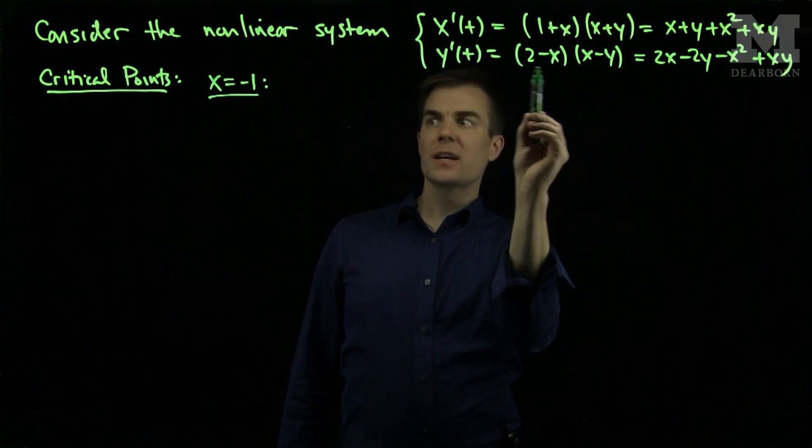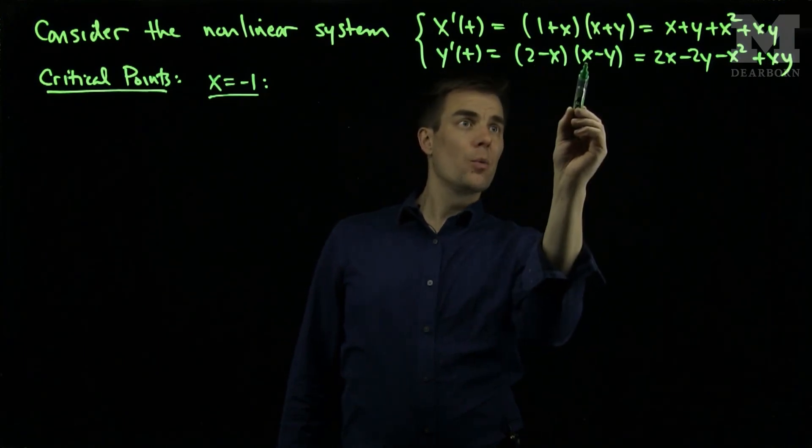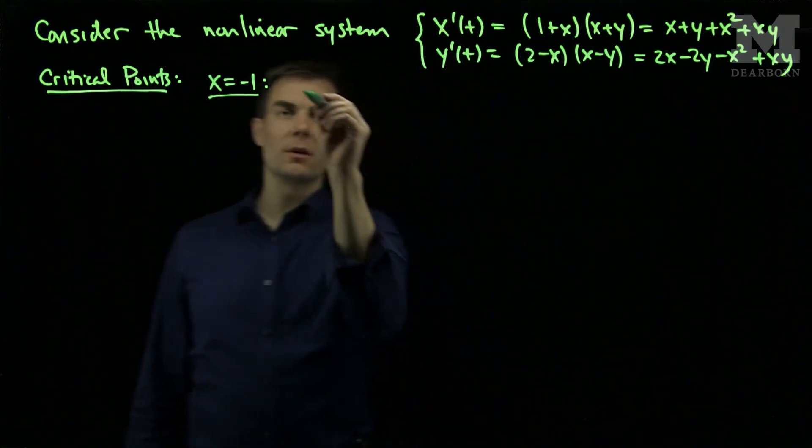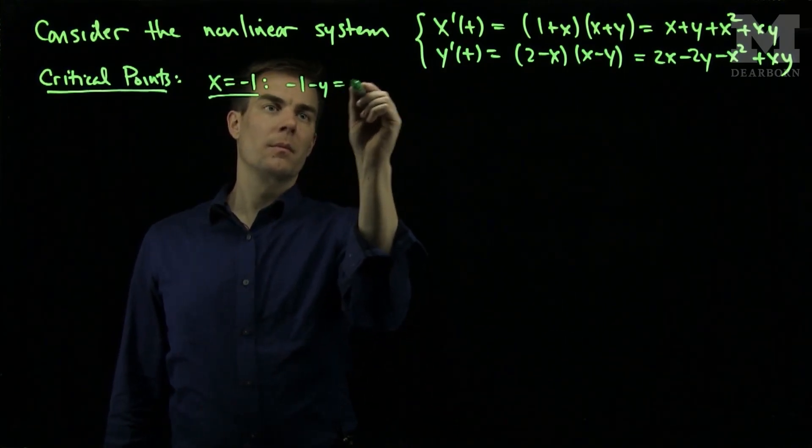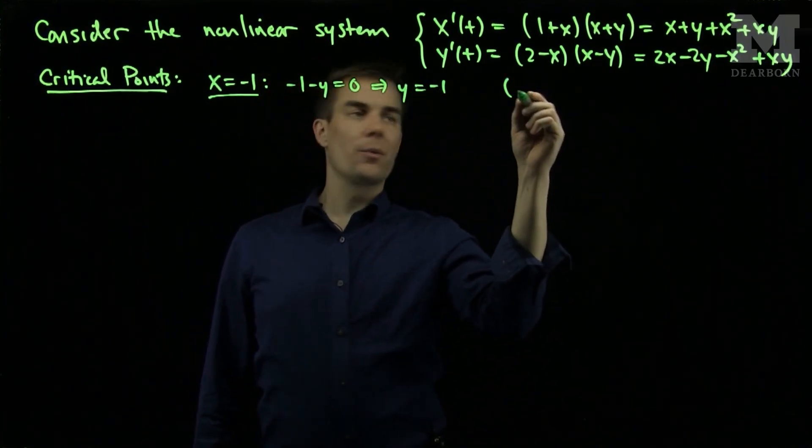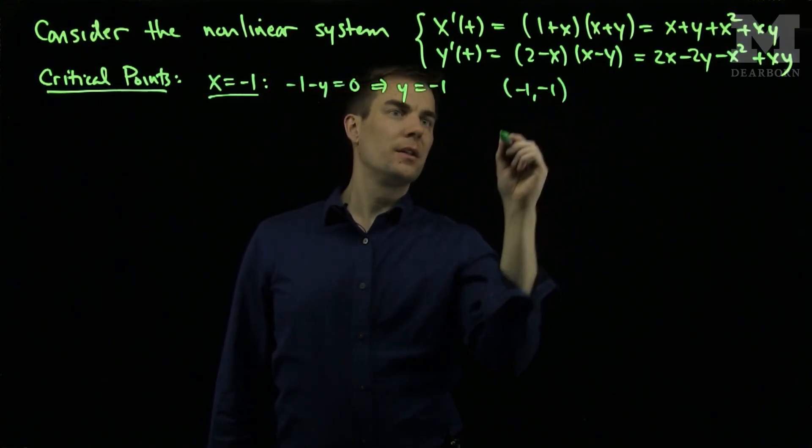And if x is negative 1, this term becomes a 3, which will force this term to be zero. So I'll have negative 1 minus y equals zero, which forces y to be negative 1. So the first critical point we have is negative 1, negative 1.